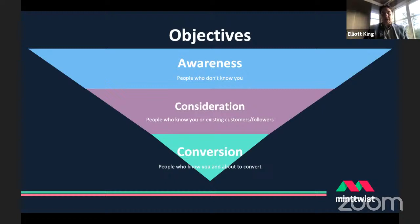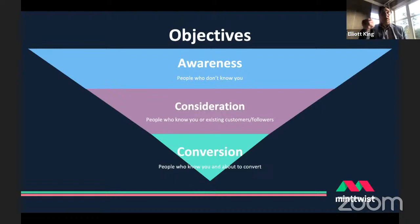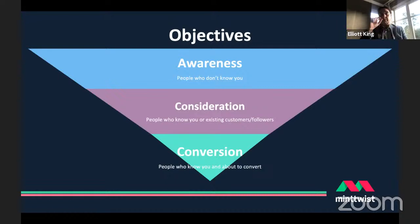Consideration targets people who do know us, who might have engaged with our content, and we want to nurture them and create more touch points to bring them further down the funnel. Then there's actual conversion. Next week we'll talk about Google Analytics where we can set up goals — typically things like buying something from a website or taking a specific action, like filling out a form. Using Google Analytics we can actually track when those things happen.